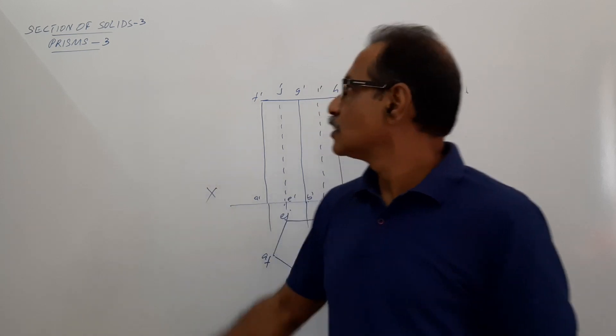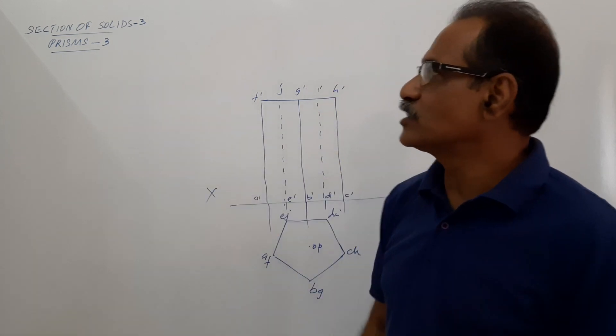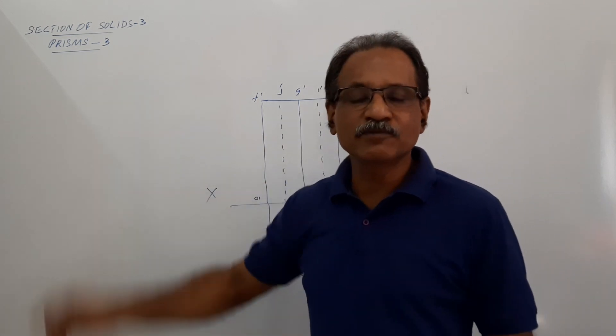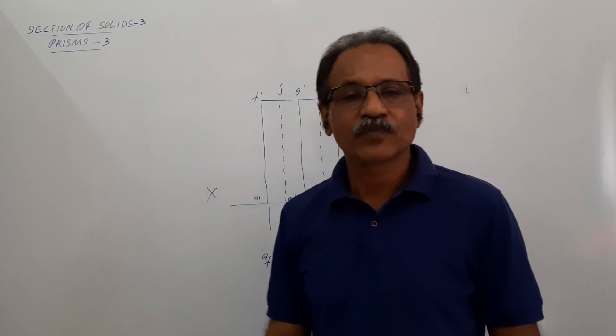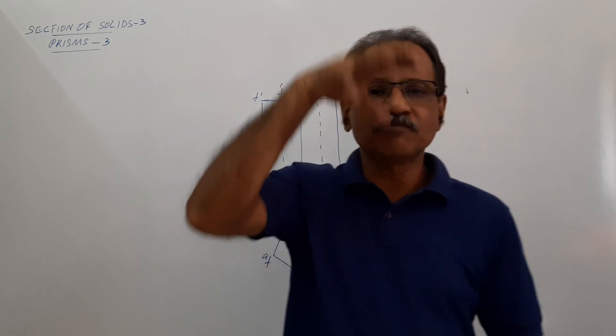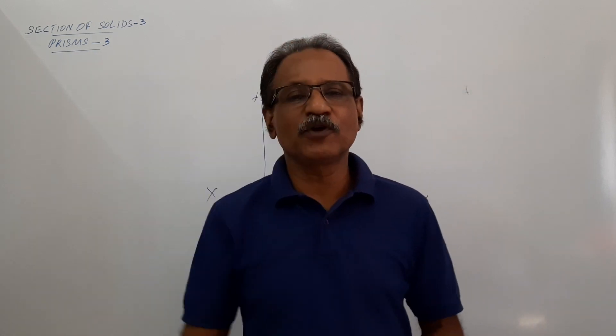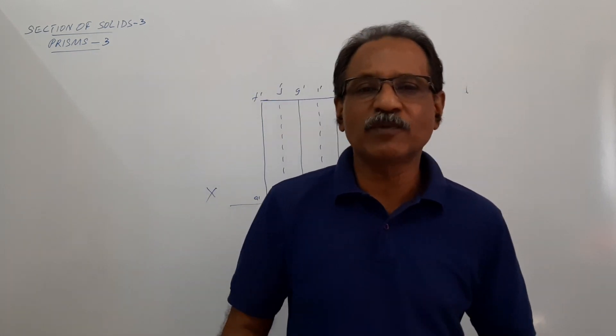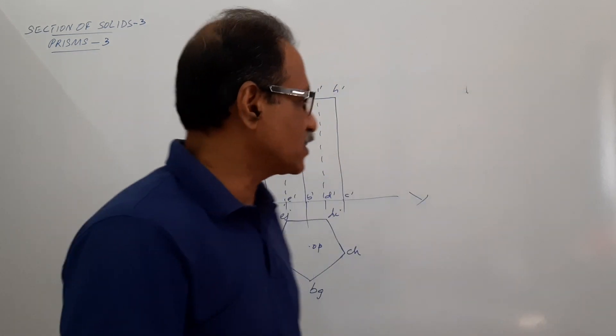Hi students. Section of solids 3, prisms 3. The same pentagonal prism which is resting on a horizontal surface, 25 mm side, 60 mm axis.